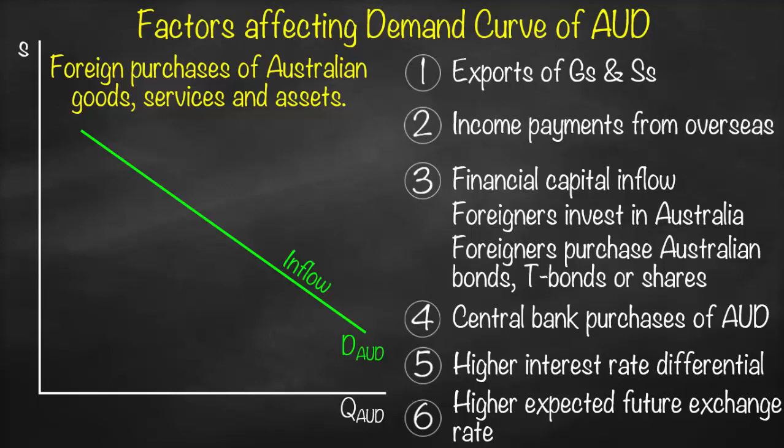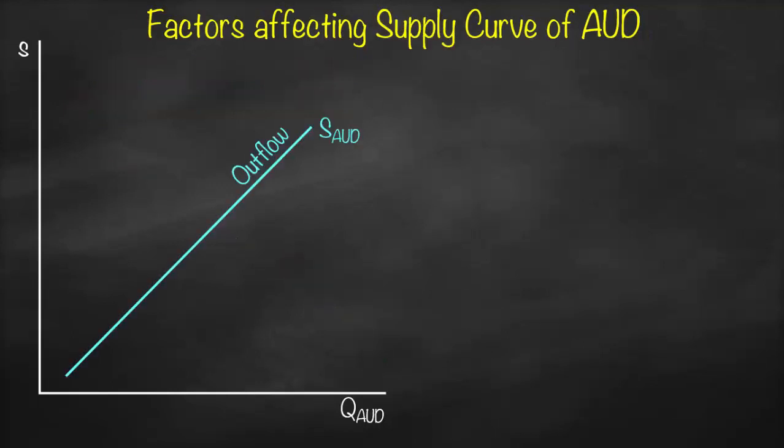Another example is a higher expected future exchange rate. If you know the value of the Australian dollar will appreciate in the future, it's better to buy it now at a lower exchange rate, wait for its value to rise, then sell it and make a profit. Consequently, a higher expected future exchange rate will shift the demand curve for our currency.